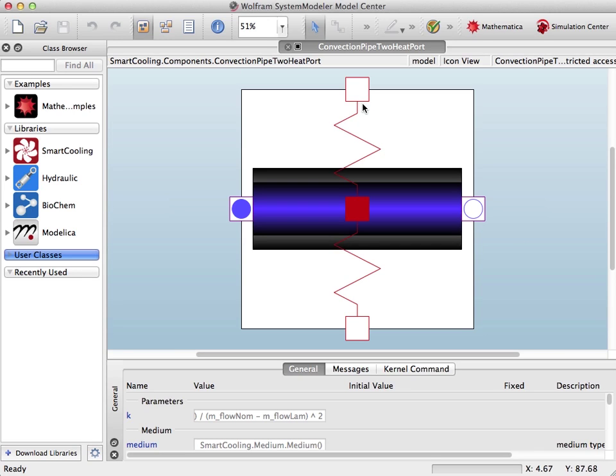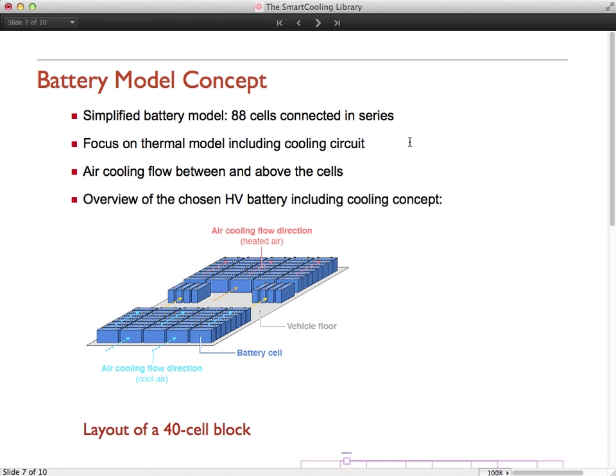The battery model we'll use consists of 88 cells connected in series. The cells all have individual thermal inertia. In this picture, you can see the layout with 40 cells in the front.